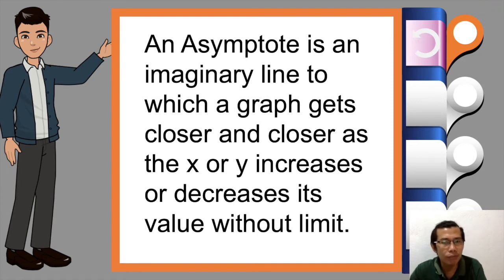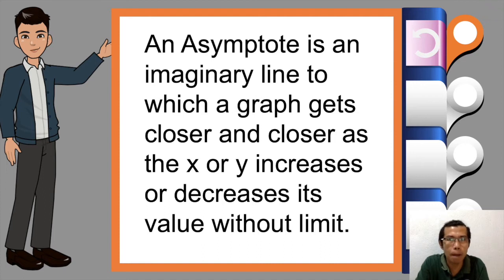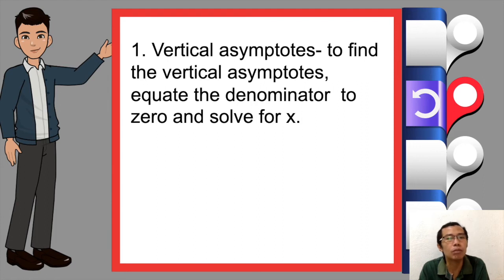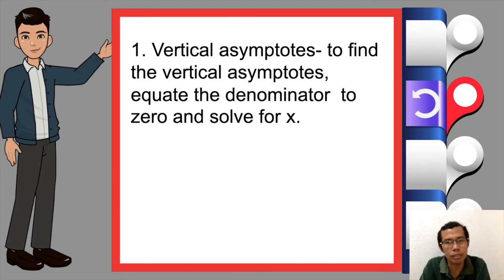How do we find these asymptotes? The first asymptote is the vertical asymptote. To find the vertical asymptote, equate the denominator to zero and solve for x.